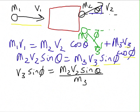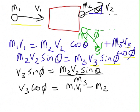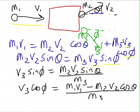And if you rearrange the top equation, we get v3 cos phi equals m1 v1 minus m2 v2 cos theta all over m3. So, how are we going to eliminate one of phi or v3? The obvious thing to do is to divide this by that. Then, the v3s will cancel and we'll have a tan phi equals this divided by that.